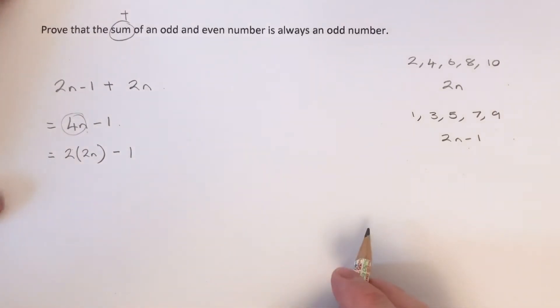Hence we've proved that the sum of an odd and an even number is always an odd number.